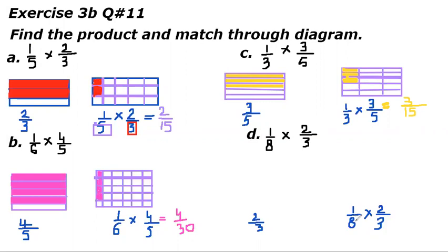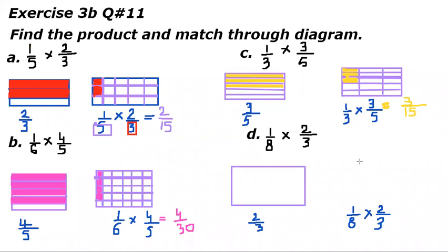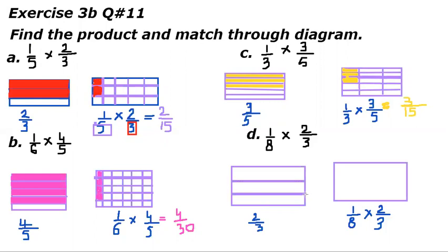Now let's do part D: one-eighth of two-thirds. First we have to draw two-thirds, then we have to draw one-eighth of two-thirds. To draw two-thirds, first we draw two boxes of exactly the same size. Two-thirds means we have to divide it into three parts horizontally and color only two parts.